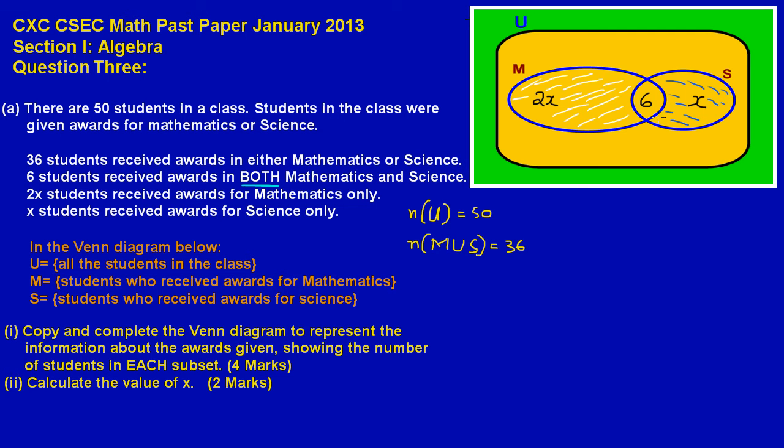I hope you're seeing that. Now pretty much having established that, they have stated that in the Venn diagram below, which we have here, U is equal to all the students in the class, and M is students who received awards in mathematics, S is students who received awards for science. We have already established all of that. Now in part one they're asking us to copy and complete the Venn diagram to represent the information about the awards given, showing the number of students in each subset, and that's an easy four marks.